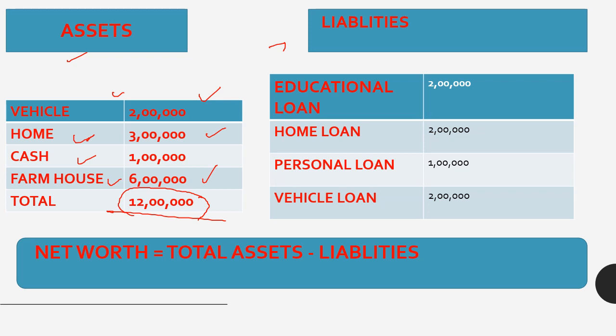So you have a farmhouse loan, a personal loan, and an education loan. The total amount of loans you have taken are your liabilities. For example: education loan 2,000,000; home loan 2,000,000; personal loan 1,000,000; vehicle loan 2,000,000 — total liabilities are 7,000,000 rupees.